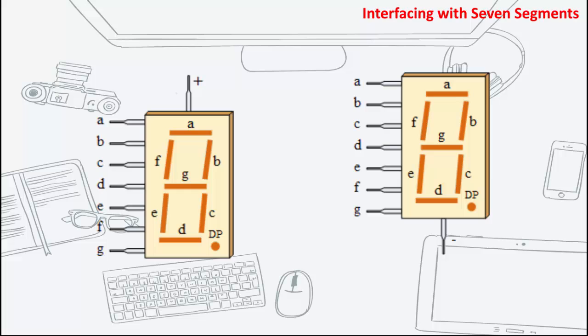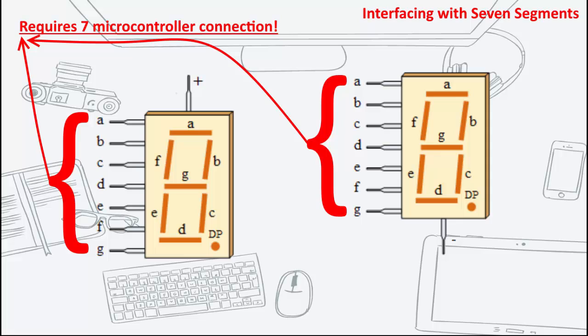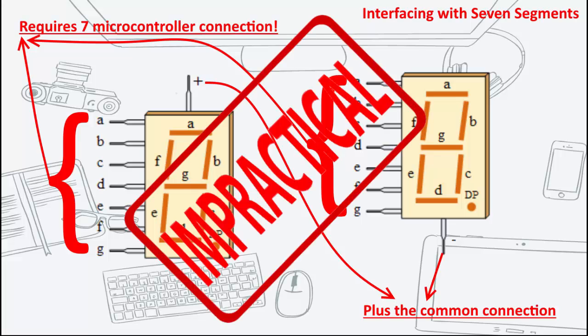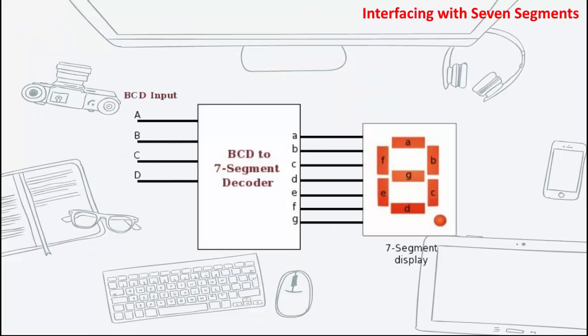To use either a common cathode or common anode display, it requires 7 separate segment connections plus an additional connection for the display's common connection. Sometimes the use of these many connections is impractical for some microcontroller-based circuits due to pin limitations. So in order to reduce the number of lines interfacing with a single 7-segment display, display decoders such as BCD to 7-segment decoders are used instead.